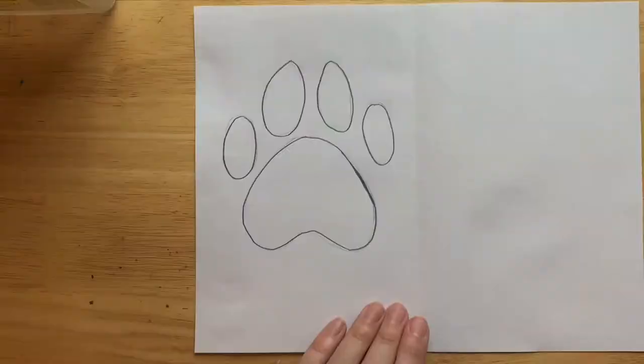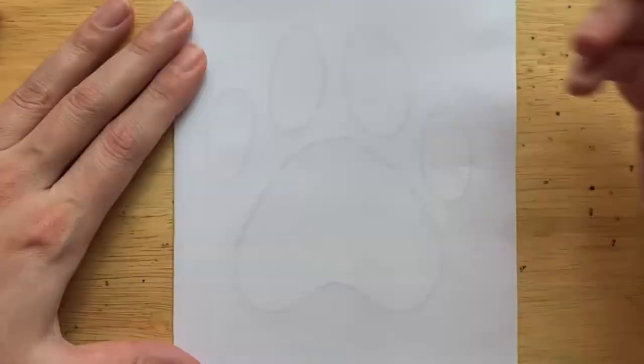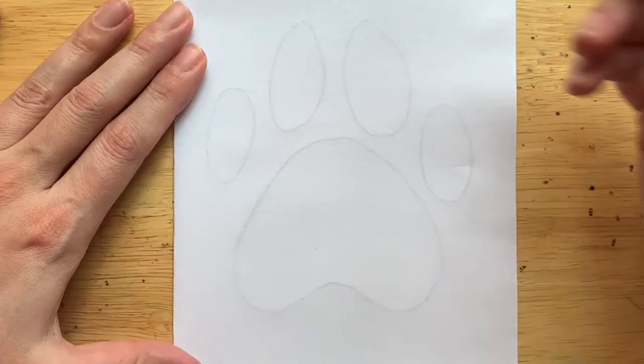Fold the paper back in half. If you look closely, you should be able to see your drawing very lightly through the paper. Pushing very hard with your pencil, trace right on top of the design that you see.